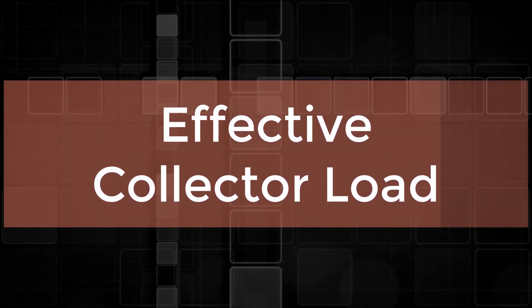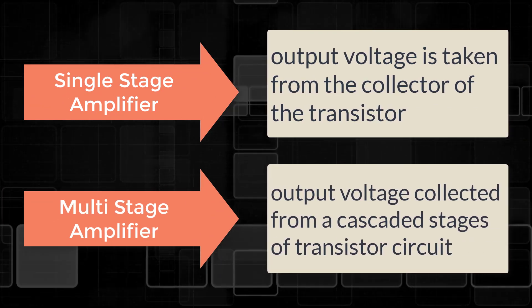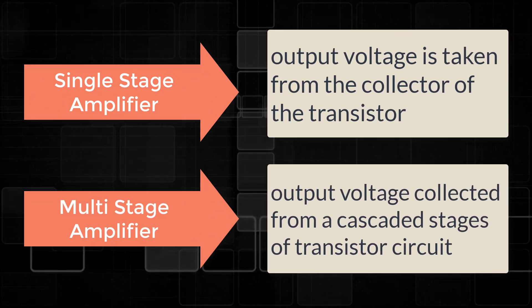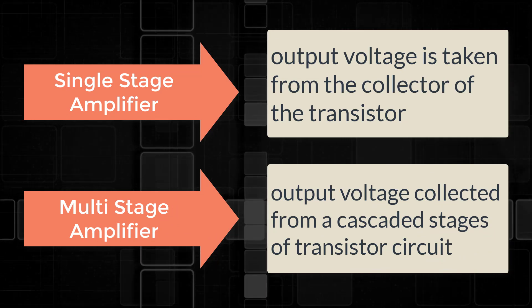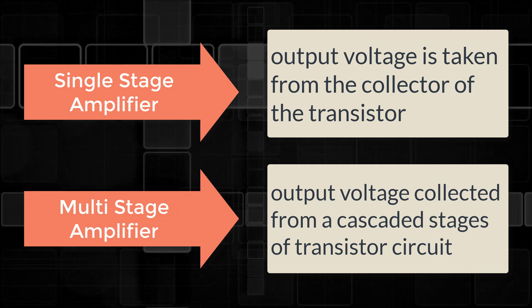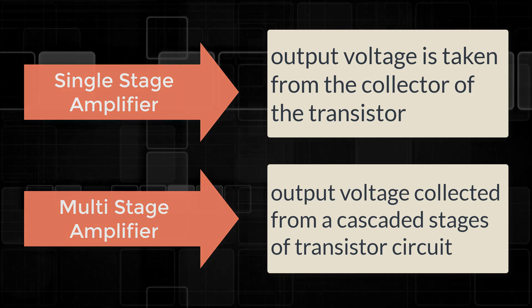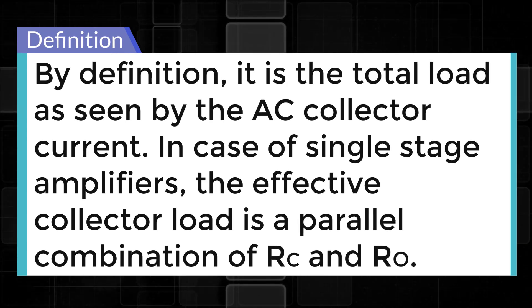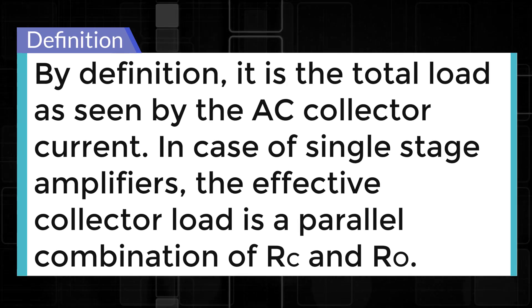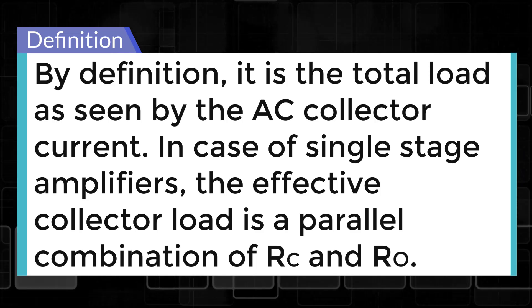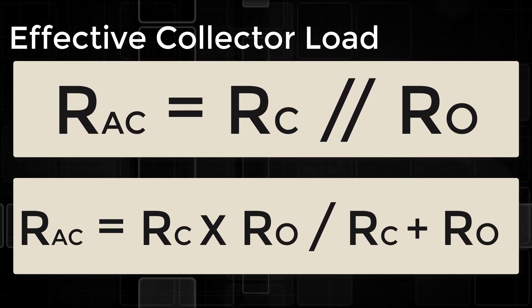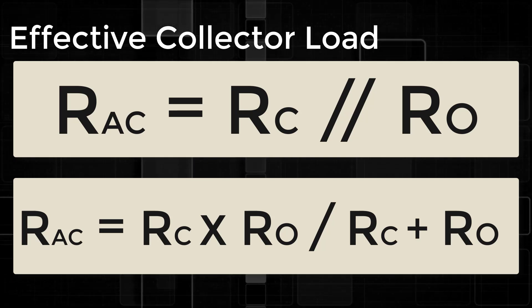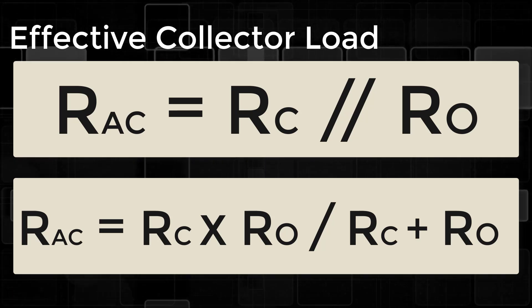Effective collector load: The load is connected at the collector of a transistor. For a single-stage amplifier, the output voltage is taken from the collector of the transistor. For a multistage amplifier, the same is collected from cascaded stages of transistor circuit. By definition, it is the total load as seen by the AC collector current. In case of single-stage amplifiers, the effective collector load is a parallel combination of RC and RO: RAC = RC × RO / (RC + RO).